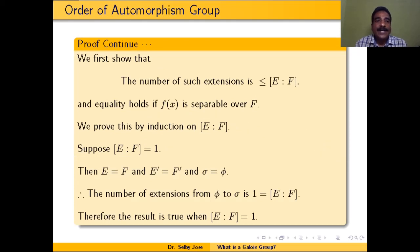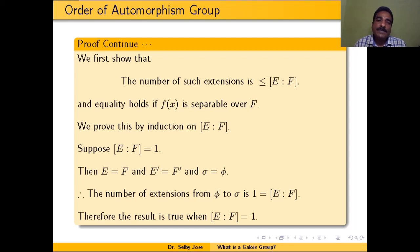We first show that the number of extensions from φ to σ is less than or equal to the degree of the extension E over F. And equality holds — meaning the number of extensions equals [E:F] — if f(x) is a separable polynomial over F. We prove this by induction on the degree of extension E over F.